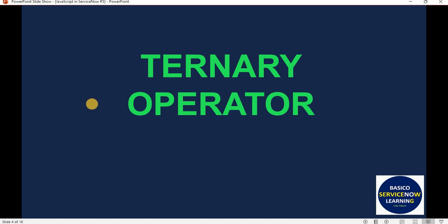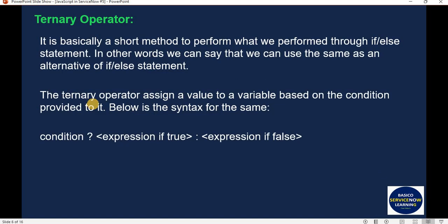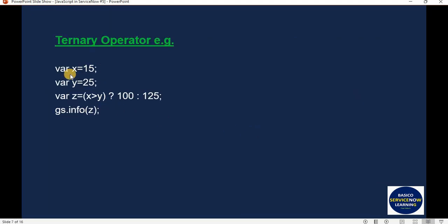The ternary operator can be used as an alternative to an if-else statement. It is basically a short method to perform what we perform through if and else. The syntax is: condition followed by a question mark — if the condition evaluates to true, a particular value is assigned to a variable; if false, another value is assigned.